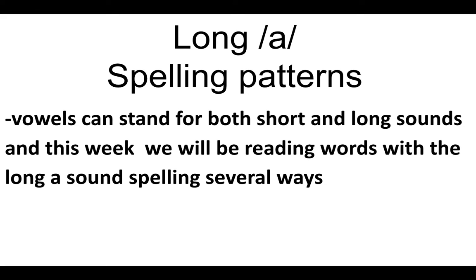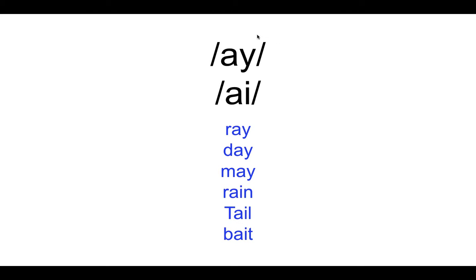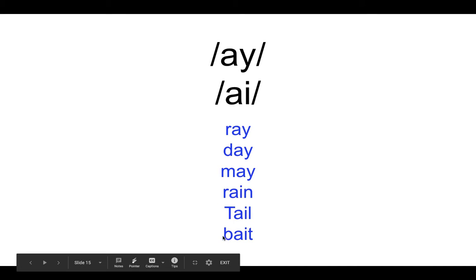Now we move on to talking about our long A spelling patterns. I noticed from our independent work on Schoology that some of us were having trouble with these. Remember, vowels can stand for both short and long sounds, and this week we are talking about the patterns that make the long A sound. Our spelling patterns are AY and A-I, which both make the long A sound. Our words are ray, day, may, rain, tail, and bait.